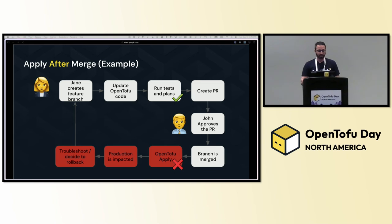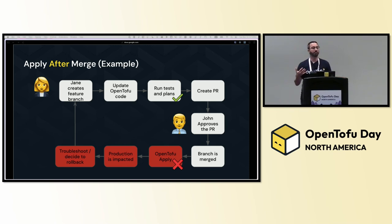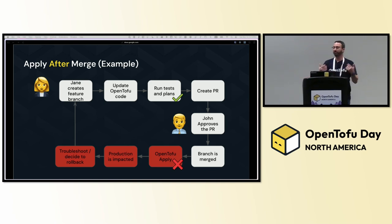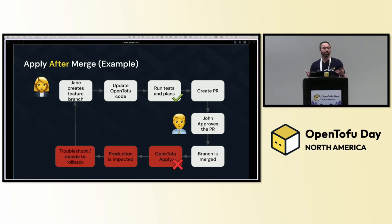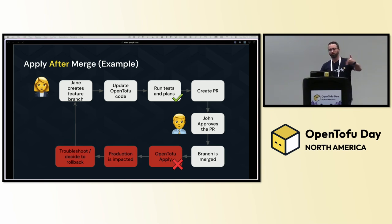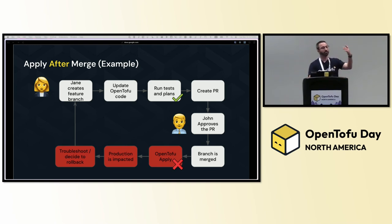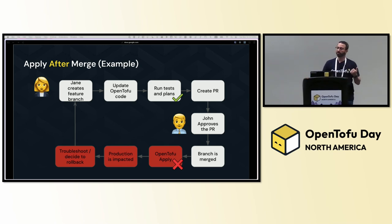Let's take a look at this example. If we have Jane — she creates a feature branch, updates, creates a PR, John approves the PR, and then we merge it after a successful plan and a successful review. The apply failed, and a lot of times it won't fail in the beginning — it will fail halfway through. So we have this kind of limbo state: half of our resources are deployed, half of them are destroyed, some are not working, and production is impacted. That means that in order to decide whether we want to roll back, whether we want to troubleshoot or fix it, we can't simply roll back to a previous commit — that's kind of against our GitOps structure. We have to go through the whole process again of creating a feature branch, updating, and merging it again. At this time, if it's the end of the day, John may have gone home. We need to find another approver, and this entire time our applications and infrastructure are impacted.